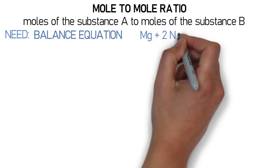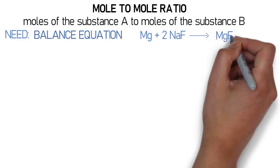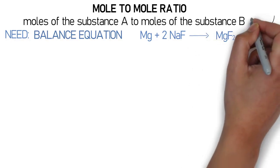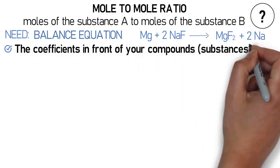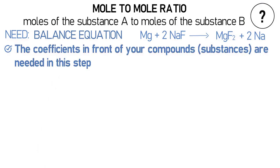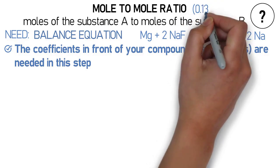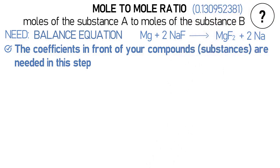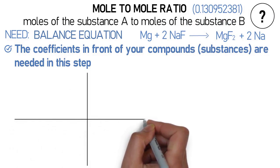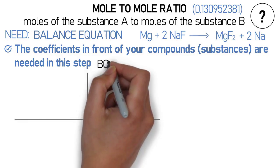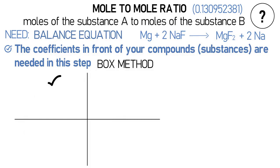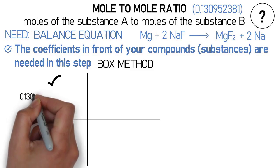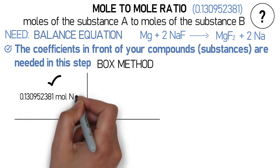The balanced equation is: magnesium plus two sodium fluoride becomes magnesium fluoride two plus two sodium. The coefficients in front of your compounds are needed in this step. Remember, in step two we found the moles for sodium fluoride to be 0.130952381. We will use the box method to set up our equation. In the upper left box, I put the moles of the substance I have — the moles of sodium fluoride at 0.130952381 moles.